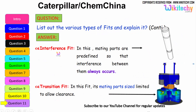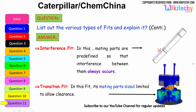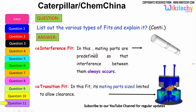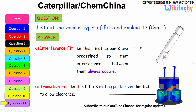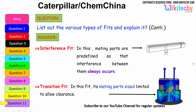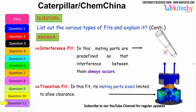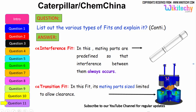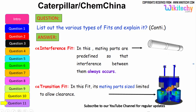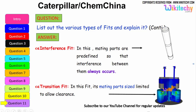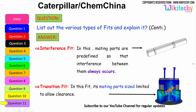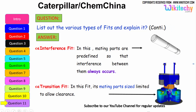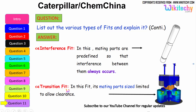For interference fit, the mating parts are predefined so that interference between them always occurs. The final one is transition fit — in this fit, mating parts' size is limited to a low clearance, so there is not an exact fitting. That is your transition fit.